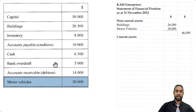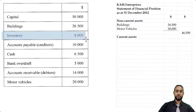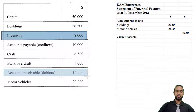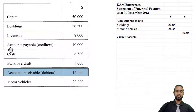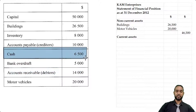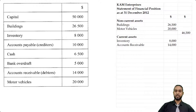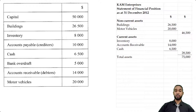Next we have current assets. Going back across the list, we're seeing inventory, then accounts receivable of 14. The bank was an overdraft, so it's a liability. And of course we have cash of 6,500. Let's populate the current asset section with those three items and get a subtotal for current assets, which will give us a total for assets of 75,000.